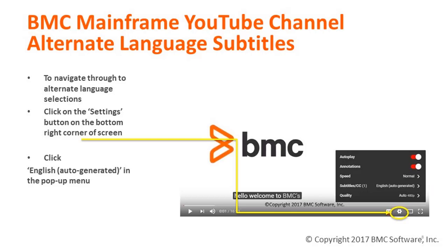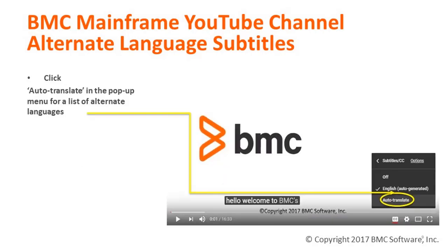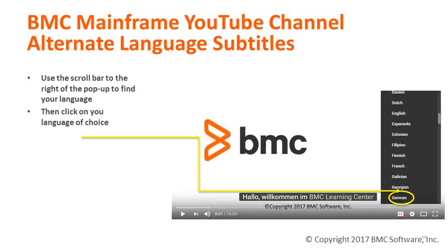Also available on some of our videos are alternate language subtitles. To use this feature, first click on the Settings button on the bottom right corner of the screen to produce a pop-up menu. Then click on Auto Translate in this menu, as shown here. And finally, choose your desired language from the list that's generated.